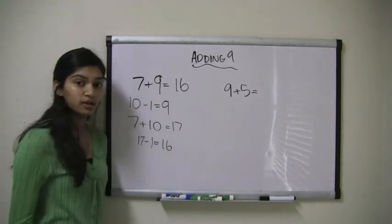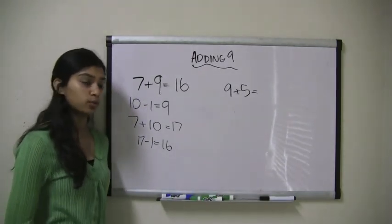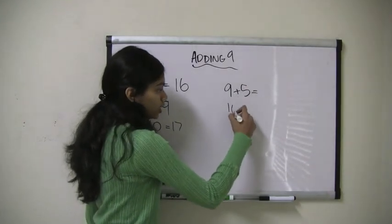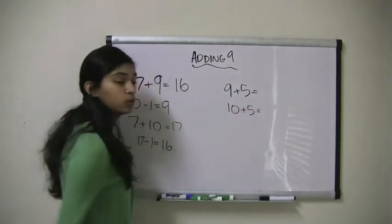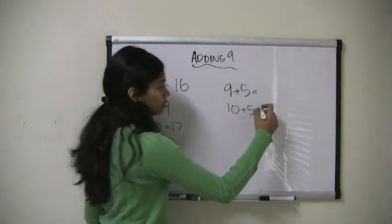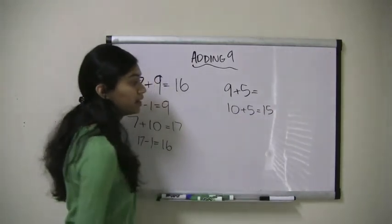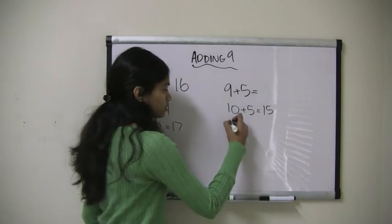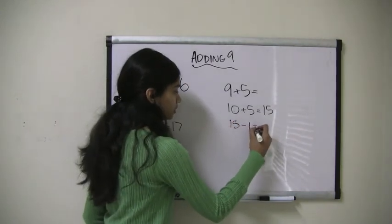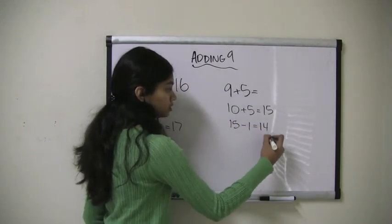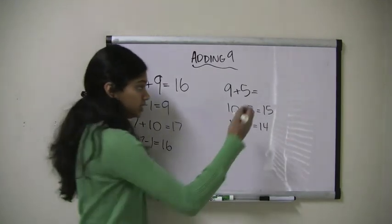So remember, first we have to add 10 and then subtract 1. So I'm going to do 10 plus 5 which equals 15. And then I have to subtract 1. So 15 minus 1 equals 14. 9 plus 5 equals 14.